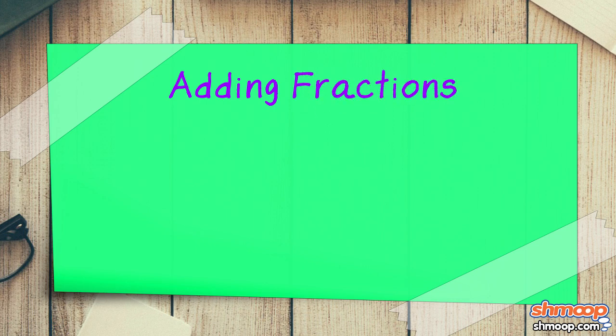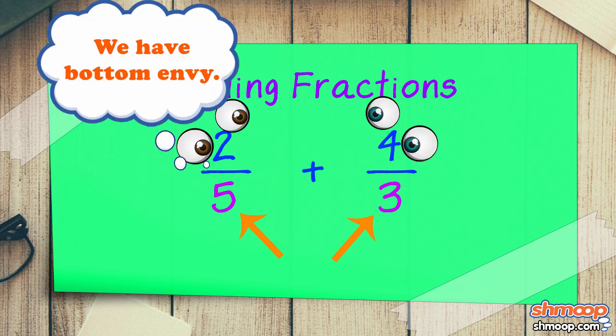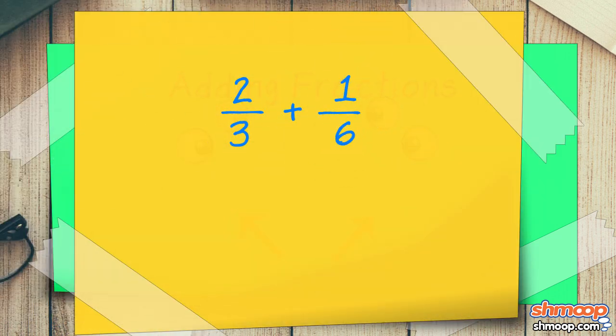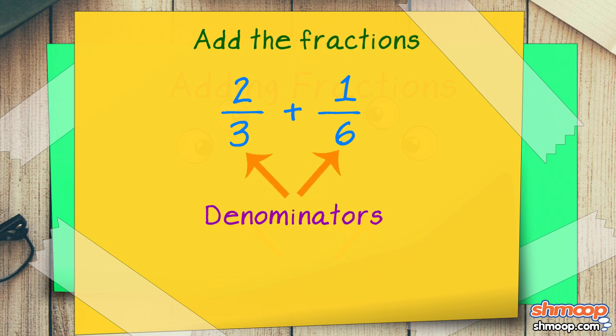Adding fractions sort of works the same way. But if the denominator is different, one or both of the fractions attempt to have the same bottom. Take two-thirds plus one-sixth, for instance. In order to add the fractions, we need to make the denominators the same.